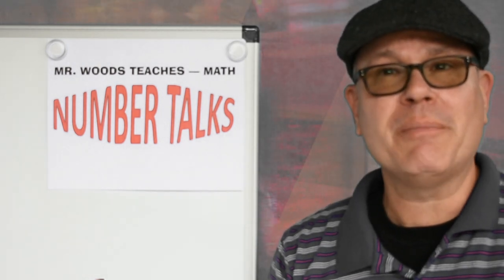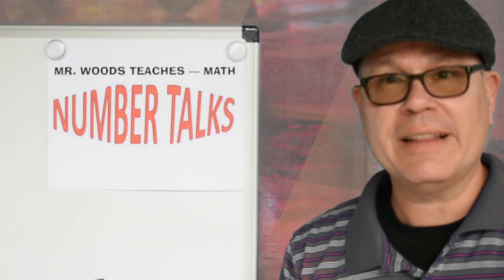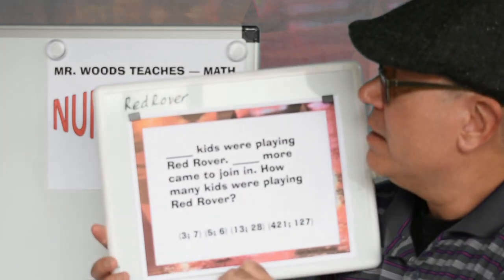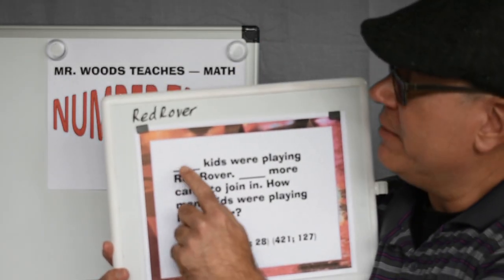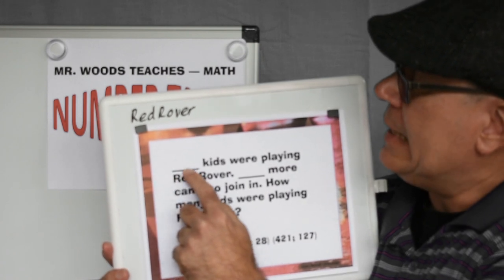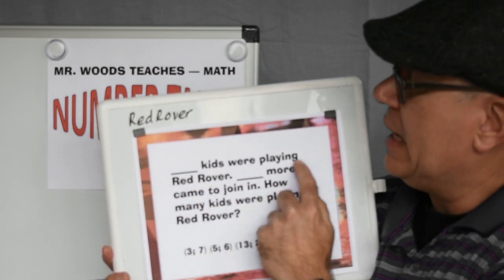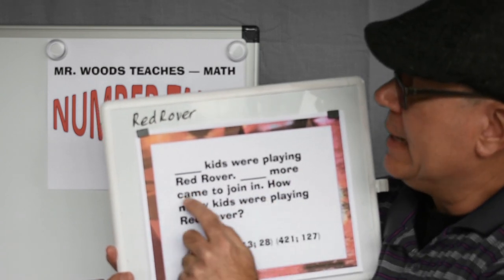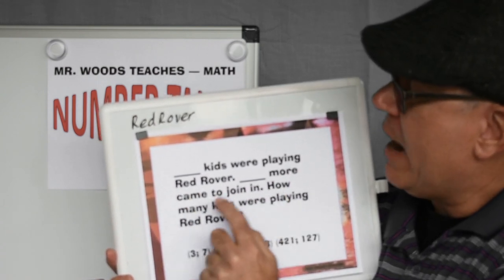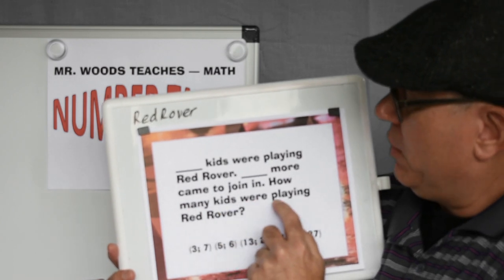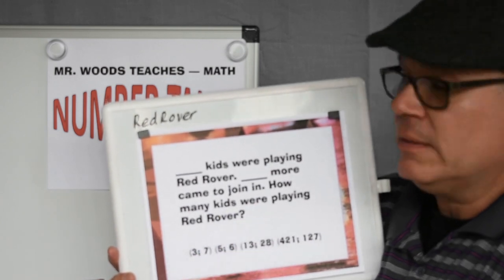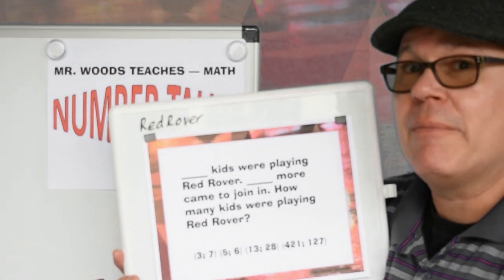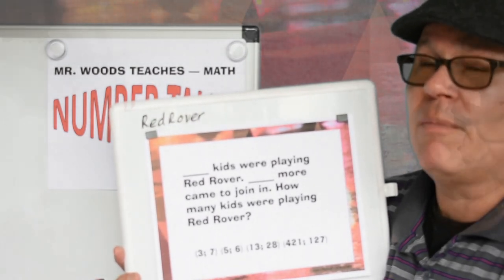We're going to be going over number talks. So today, let's take a look at what we have. This says here, blank kids were playing Red Rover. Blank more came to join in — how many kids were playing Red Rover? You can put your own numbers in those blanks, but I'm going to go over it real quick with my own numbers.